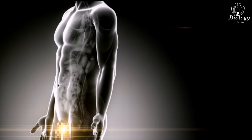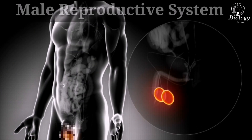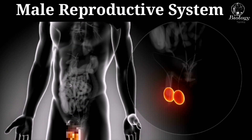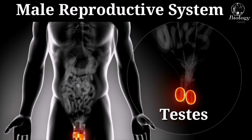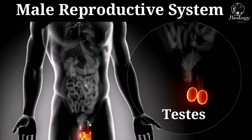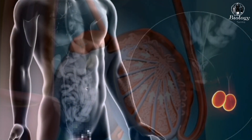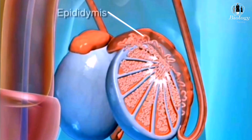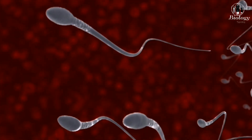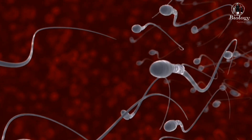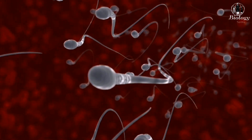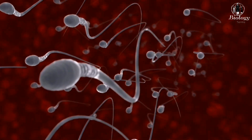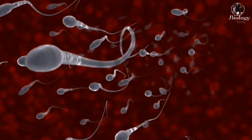Let's start by looking at the male reproductive system. The testes produce sperm cells, which are then stored in the epididymis until ejaculation. During sexual intercourse, the sperm cells are ejaculated from the penis and enter the female reproductive system.